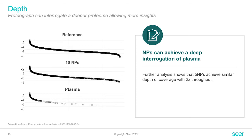Next we looked at the dynamic range and how nanoparticles facilitate wider and deeper coverage. On the very top you see the reference proteome from Keshishian et al. 2015, and we overlaid the proteins detected across a panel of 10 different nanoparticles. We capture the entire dynamic range spanning more than 10 orders of magnitude, and in comparison to neat plasma shown at the very bottom, we get particularly more proteins at the lower abundance range — the hard-to-get proteins that are usually of most interest in a biological study.